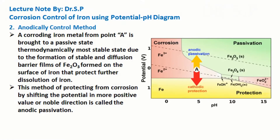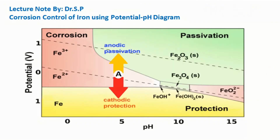In the anodically controlled method, a corroding iron metal from point A is brought to a passive state — the thermodynamically most stable state — due to the formation of stable diffusion barrier films of ferric oxide (Fe2O3) formed on the surface of iron, which protect further dissolution of iron. This method of protecting from corrosion by shifting the potential in a more positive or noble direction is called anodic passivation.